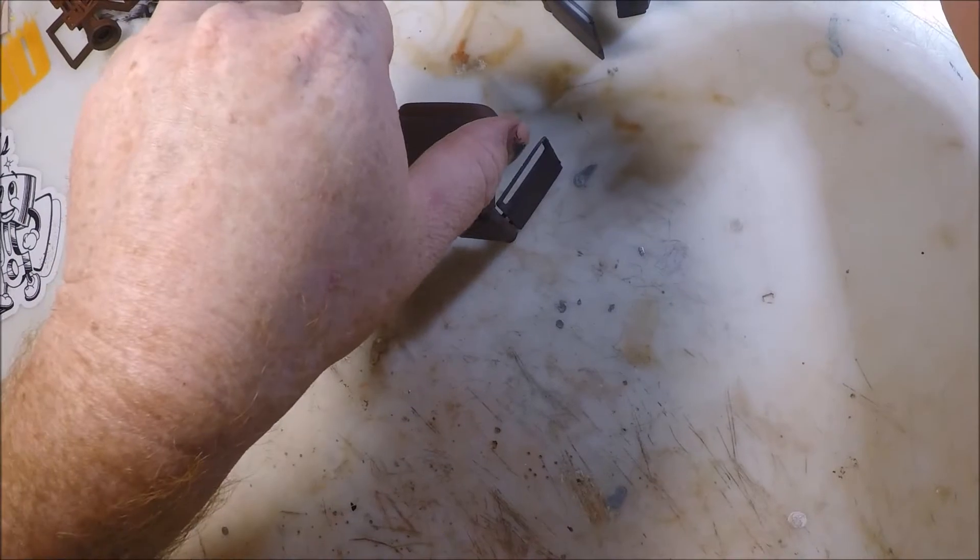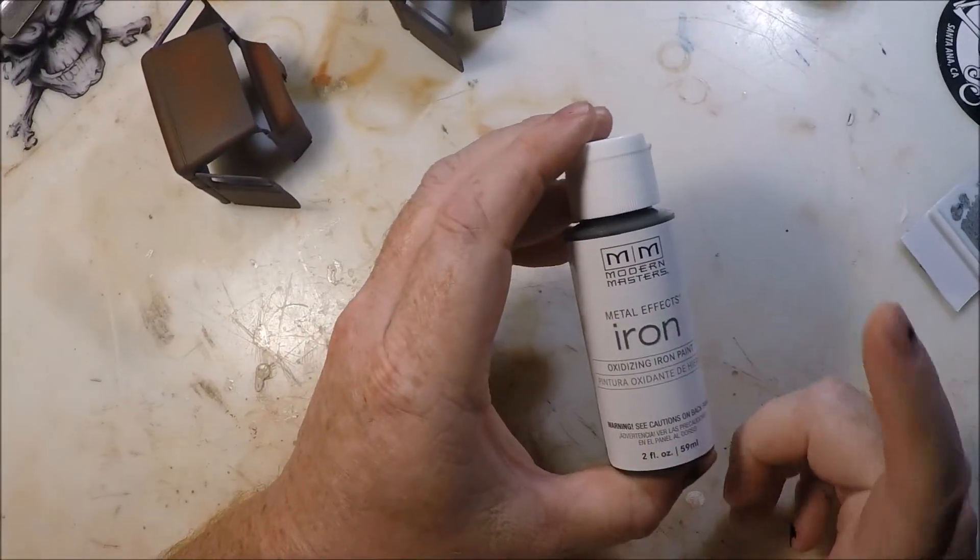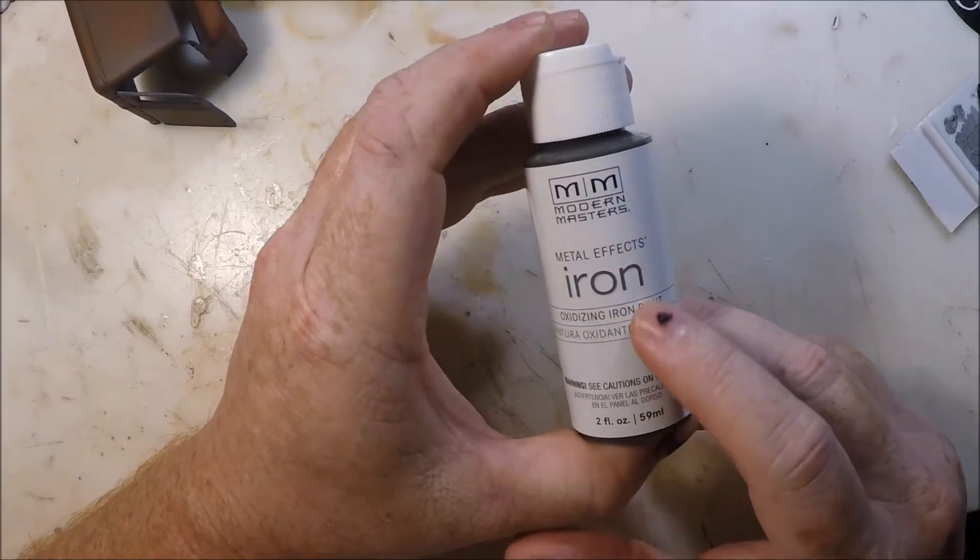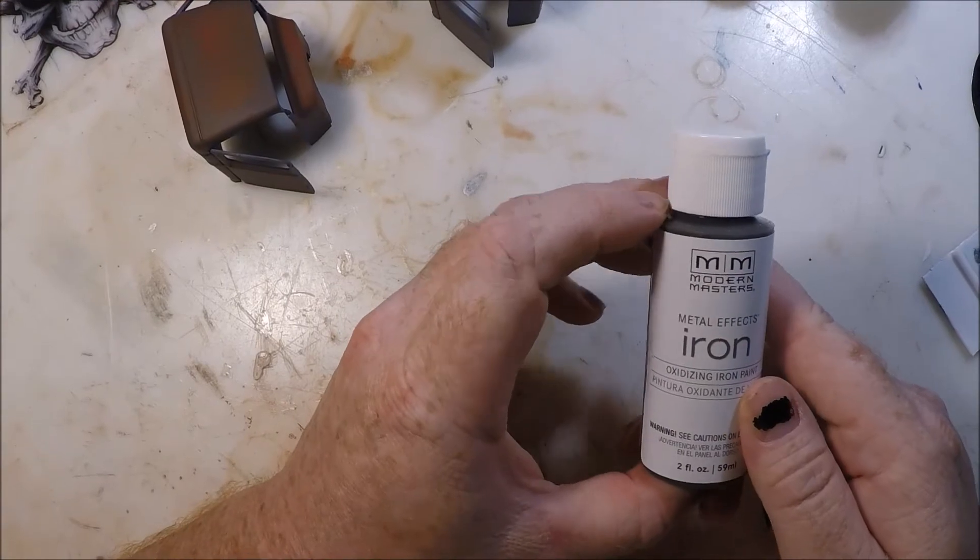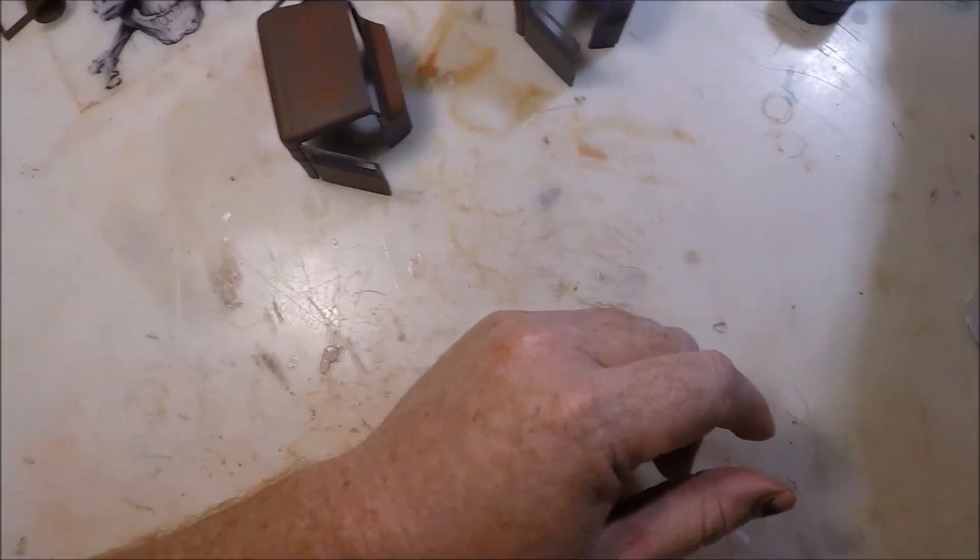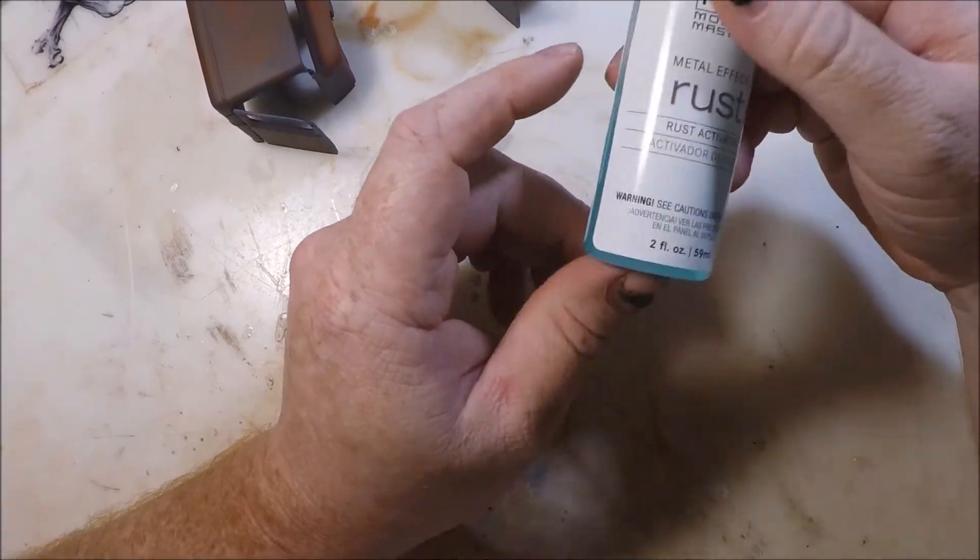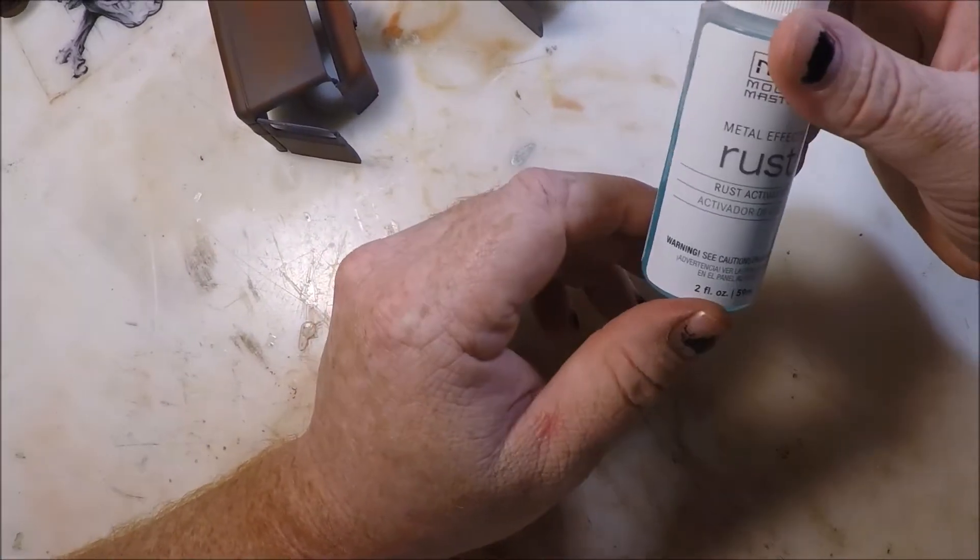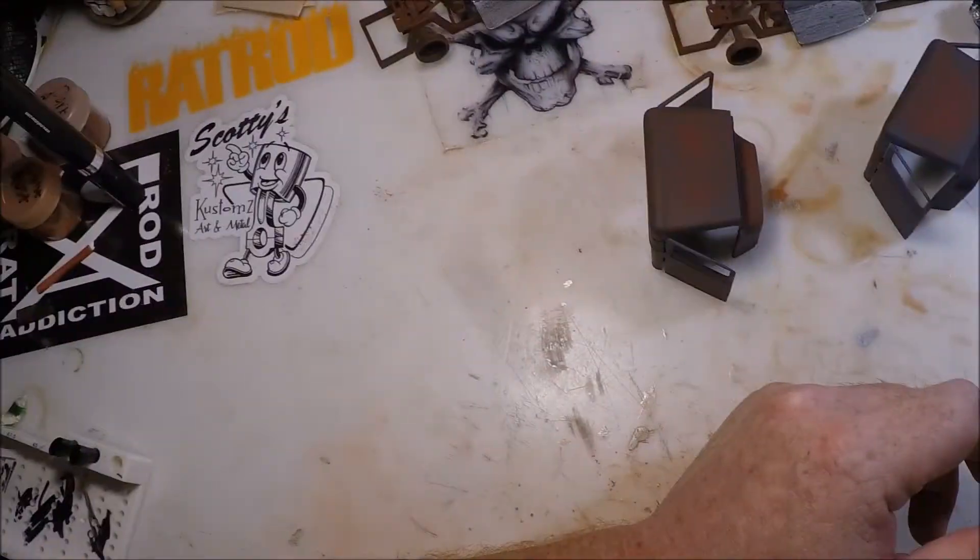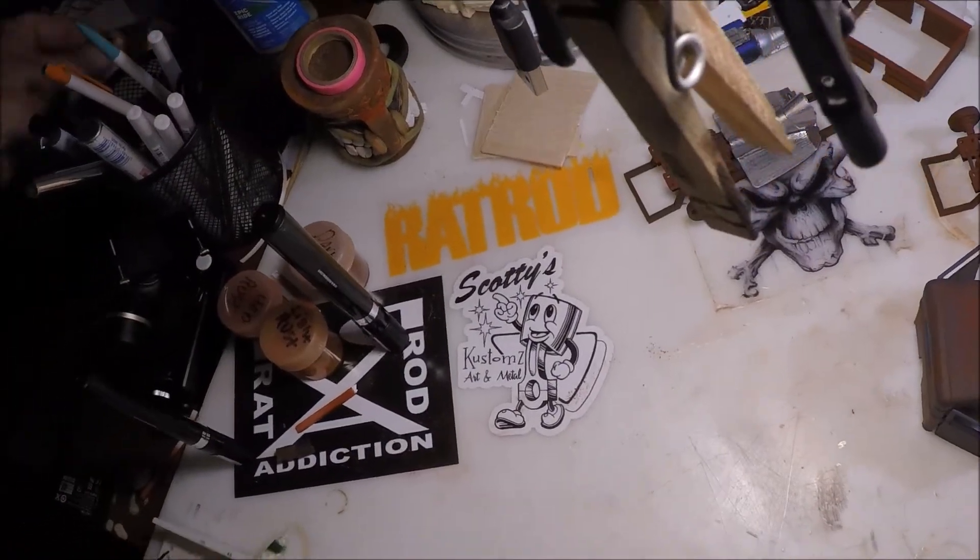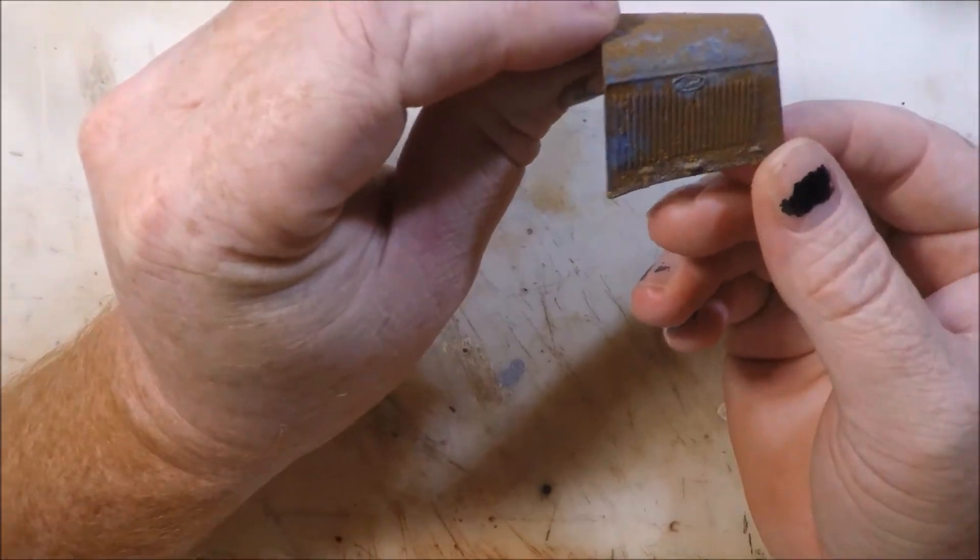So what I'm using to do that with is this Modern Masters iron oxidizing iron paint. It works really well. I've used it before. And this is the activator that you get with it. Now I have heard of people using vinegar and stuff like that to activate it. I've just never tried it. But I have done a sample of this stuff to give you an idea. And that's what you come up with right there.